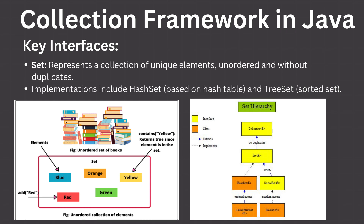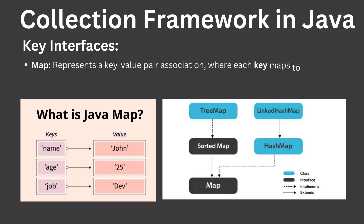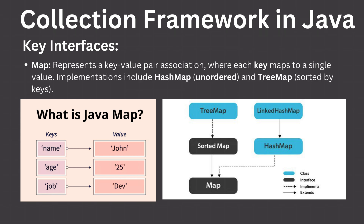Map: Represents a key-value pair association, where each key maps to a single value. Implementations include HashMap, which is unordered, and TreeMap, which is sorted by keys.